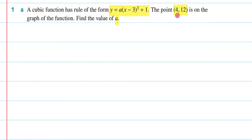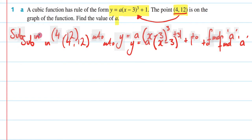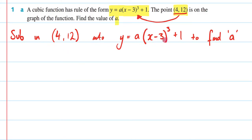So in order to do this, what we're going to do is take our point and sub it into our rule. So if we were to write out what we're going to be doing here, we could write it as follows. We are going to sub in (4, 12) into our rule to find a. So let's now do that.